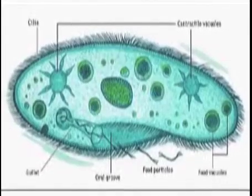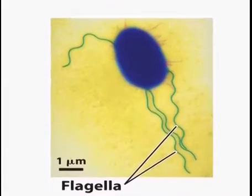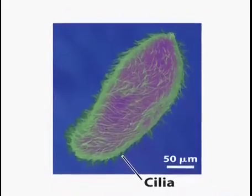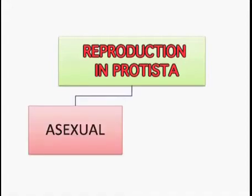Just like Monerans, these are also microscopic — they cannot be seen with the naked eye. Locomotion in these protoctistans is either by flagella, cilia, or pseudopodia, and reproduction is either asexual or sexual. Just like the Monerans, they too have a diversified nutritional mode; they can either be autotrophic, saprophytic, parasitic, or they can feed on other organisms.